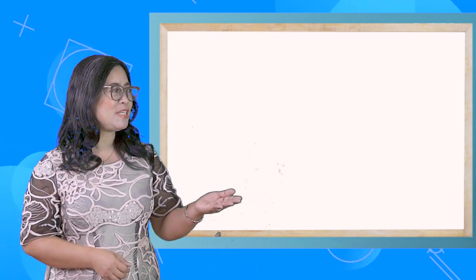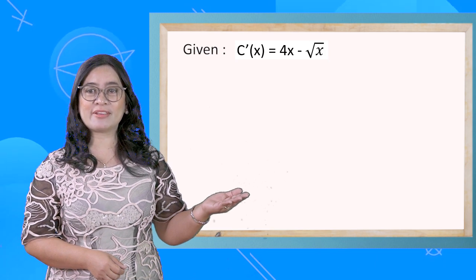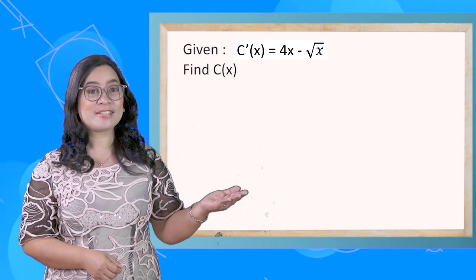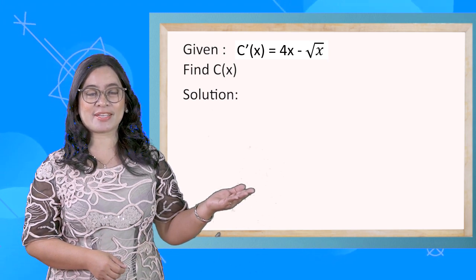In the given scenario, the marginal cost is defined as C'(x) = 4x - √x. Find C(x). To solve C(x), integrate C'(x).